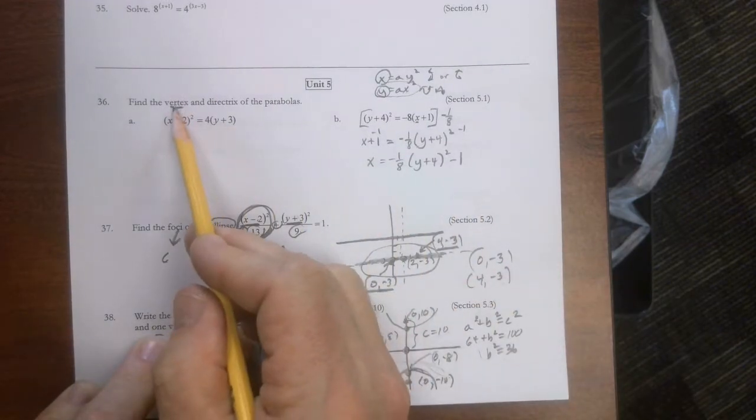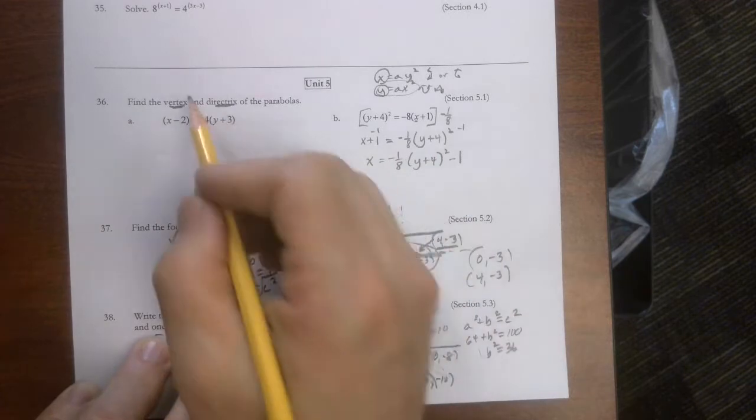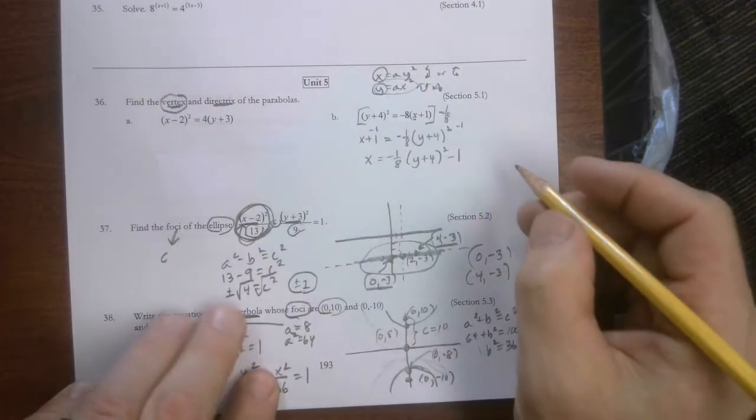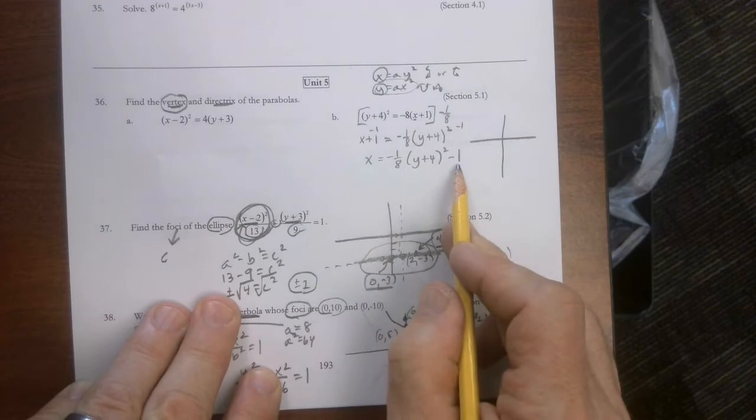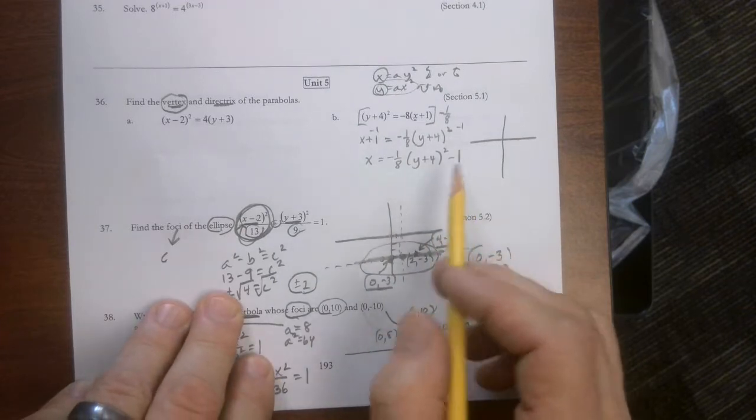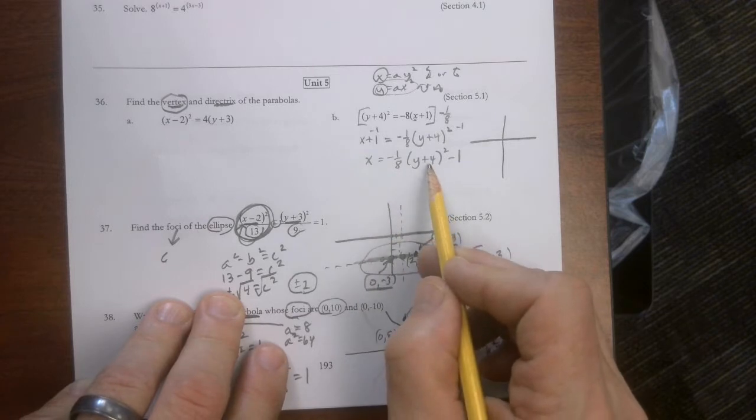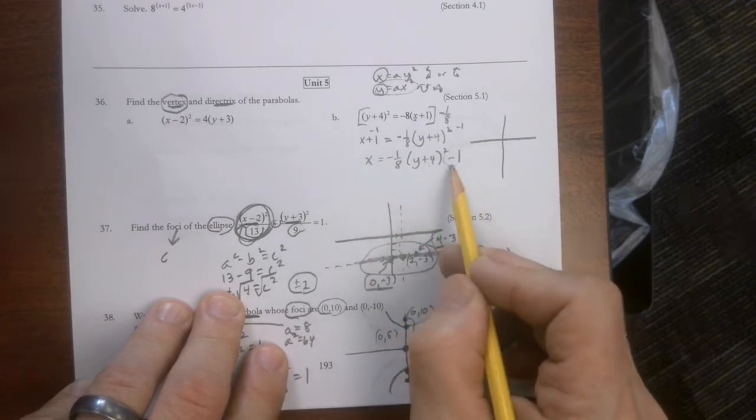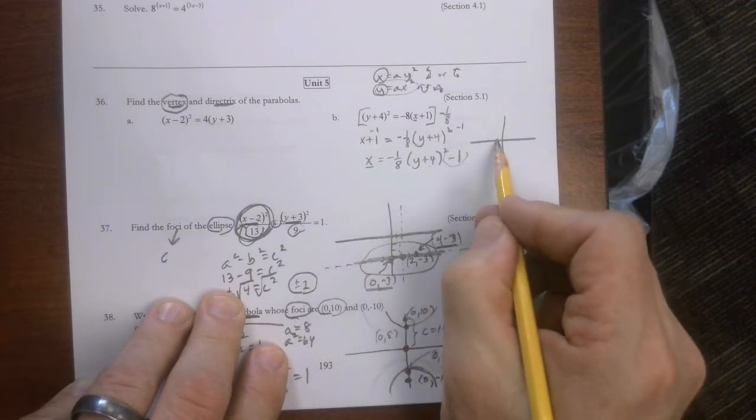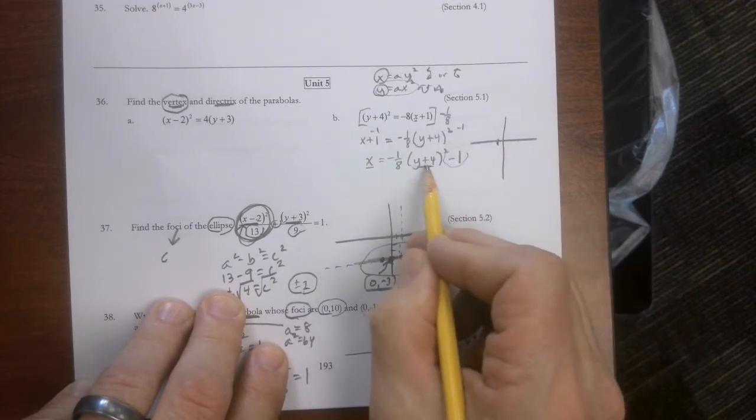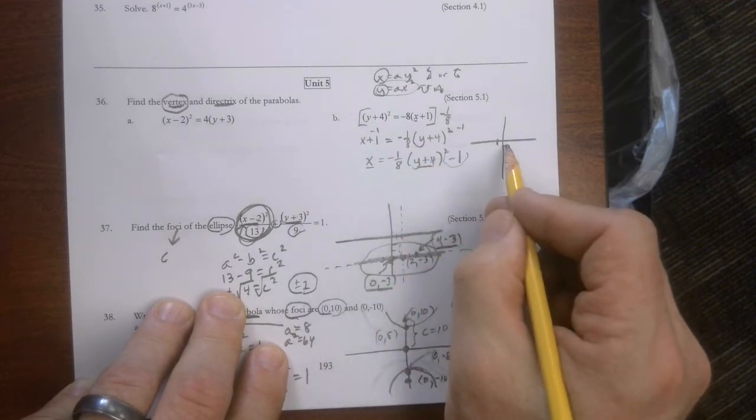Now it says find the directrix and the vertex. Well, we're going to start with the vertex because you should. And that's where this feeds us the information. Now, because this is an x equals y squared kind, this goes along with this. So this is going to go left 1. This is my y. And because it's y plus 4, you're going to go down 4.